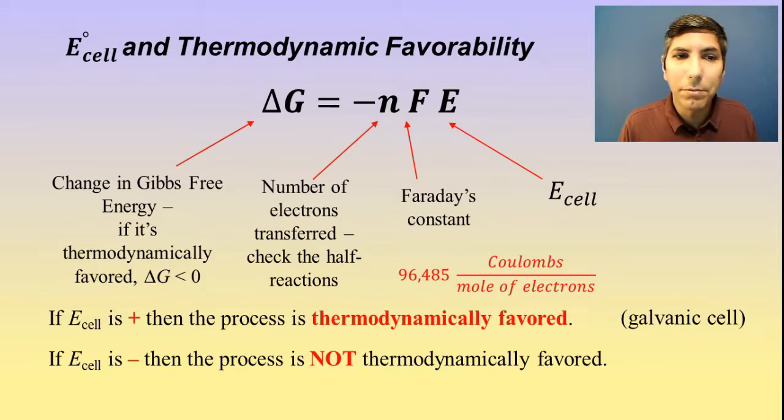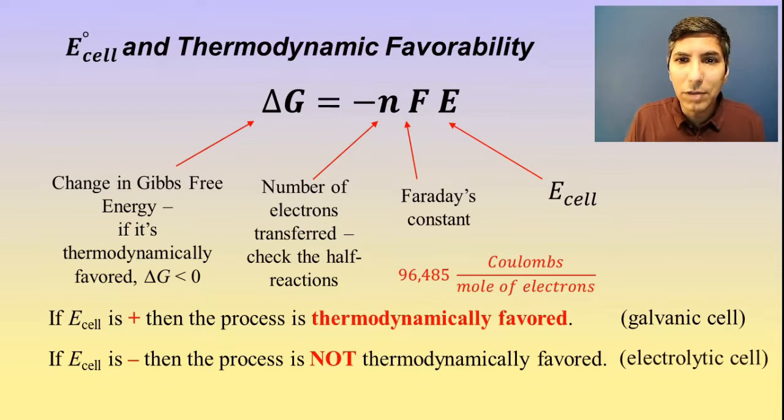If that's the case, the process is not thermodynamically favored. That doesn't mean the process could never take place. There is a special type of electrochemical cell that is specifically for that, called an electrolytic cell. It's a process of electrolysis where we have to connect an external power source to make the reaction proceed. We are going to take a look at that in a couple of videos coming up.